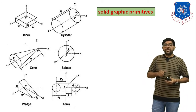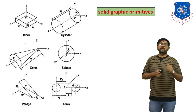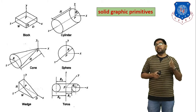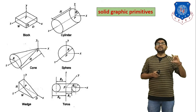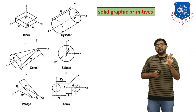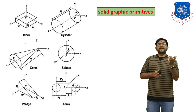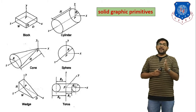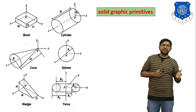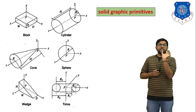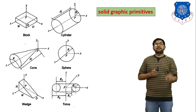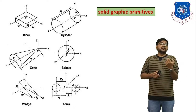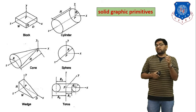The next primitive is the wedge. In a wedge, you have to give three values: w, d, and h — meaning width, depth, and height of the wedge. If you give these three input values, you can generate a wedge directly in the modeling software. For torus, you have to give r_i and r_o — meaning inside radius and outside radius — and some distance, and you can generate a torus in the modeling software directly.